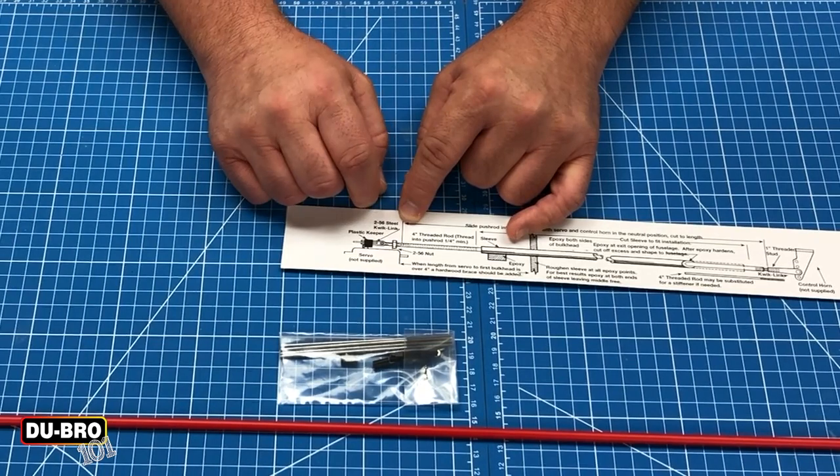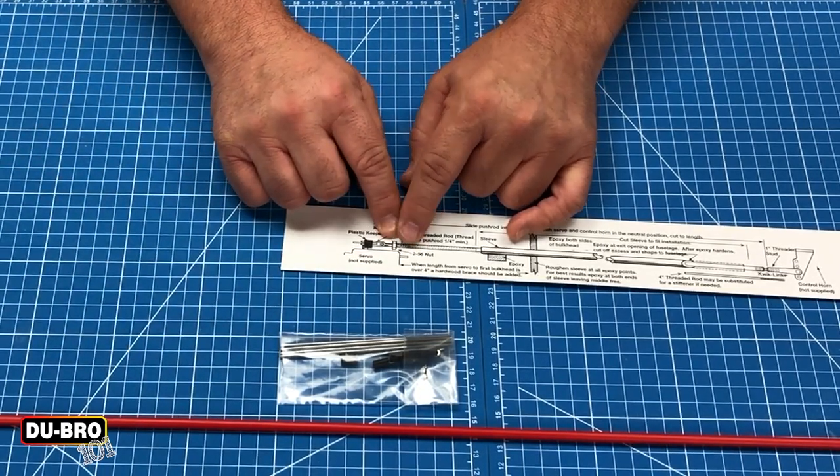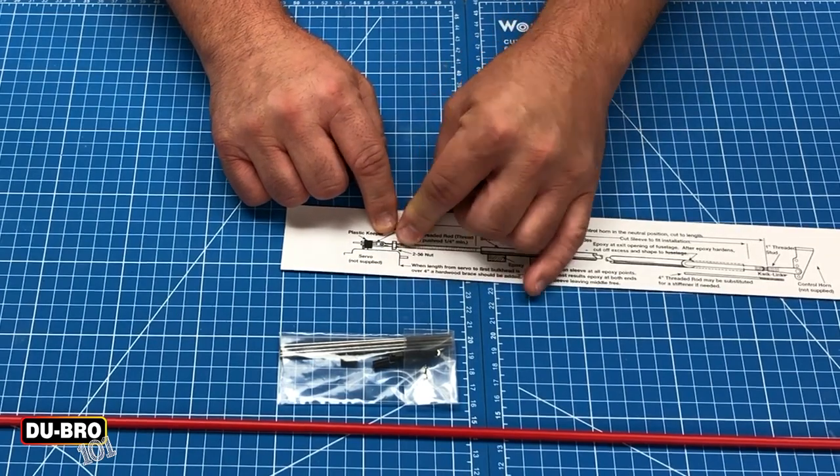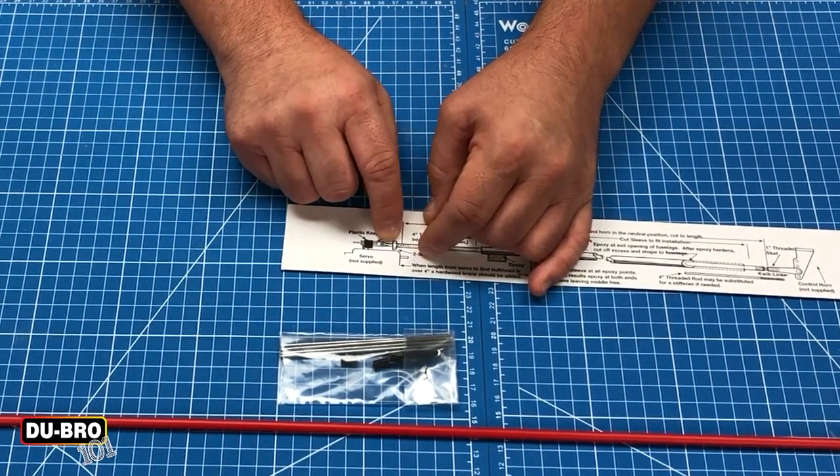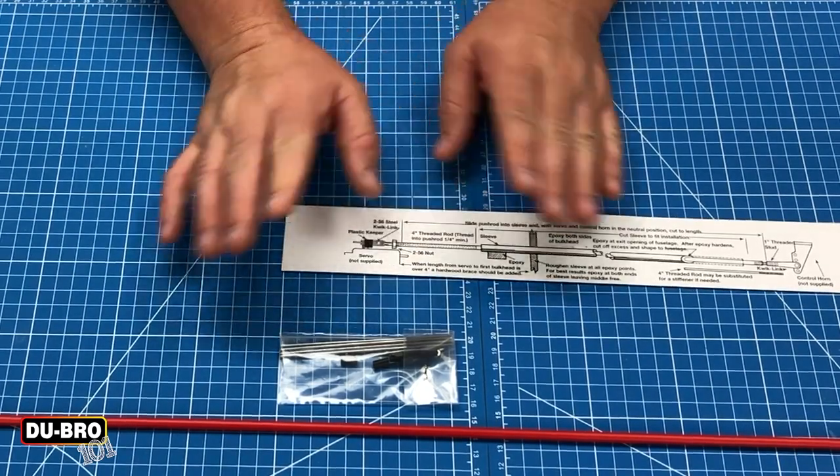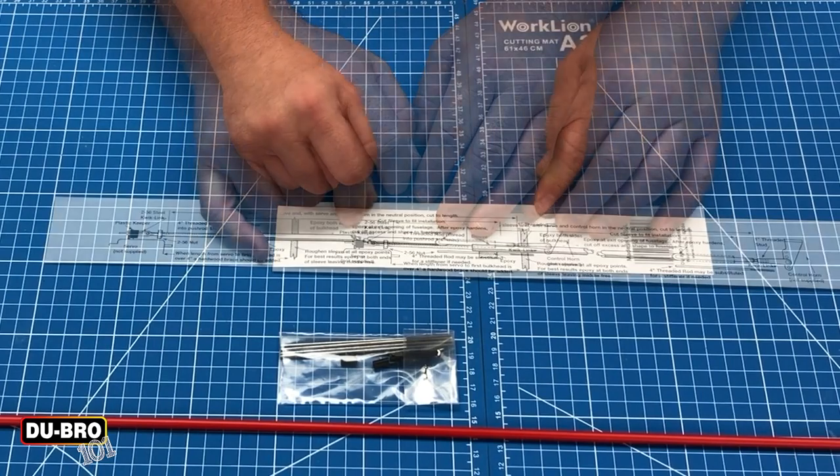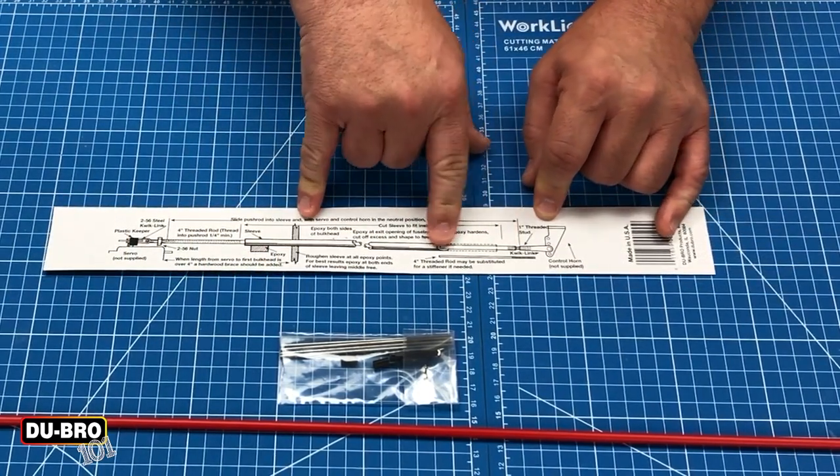Quick link clevises are awesome, and these slide over top so they don't pop apart and you lose control of your model. You also have the 2-56 nut that is a jam nut that goes up against the clevis and prevents the control rod or the clevis from turning while in flight, so everything stays the correct length.